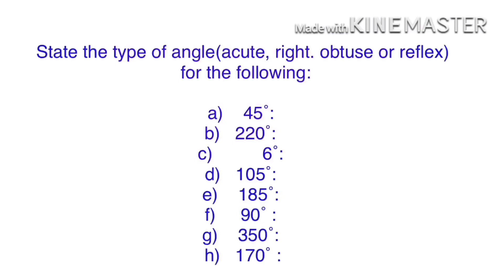Now let us solve some problems. State the type of angle — acute, right, obtuse, or reflex — for the following: A) 45 degrees, B) 220 degrees, C) 6 degrees, D) 105 degrees, E) 185 degrees, F) 90 degrees, G) 350 degrees, H) 170 degrees. Kids, try to solve these.